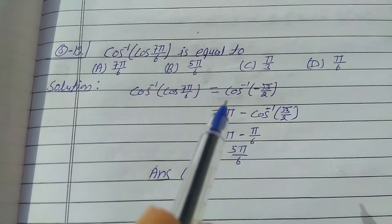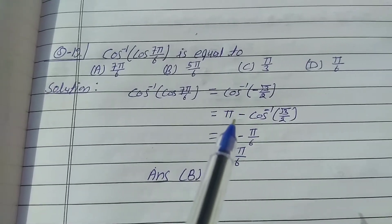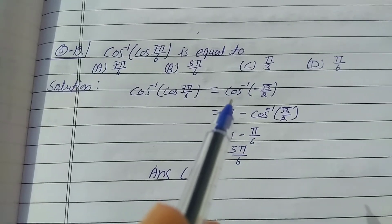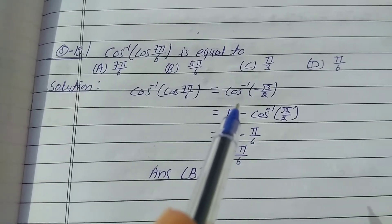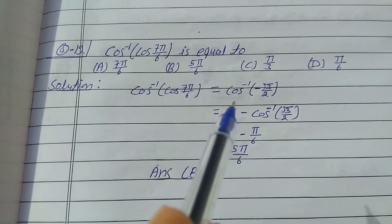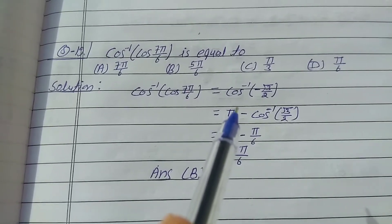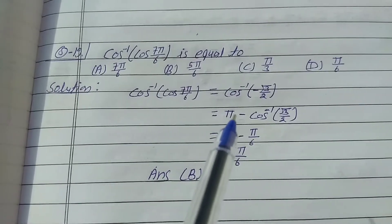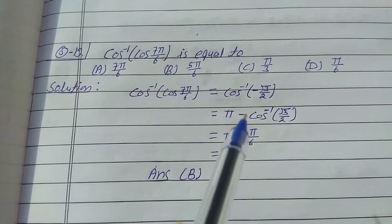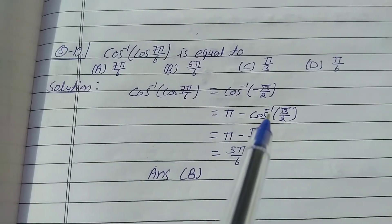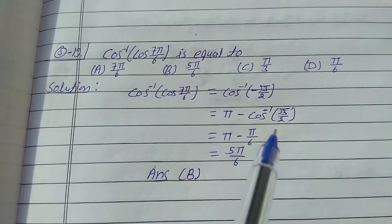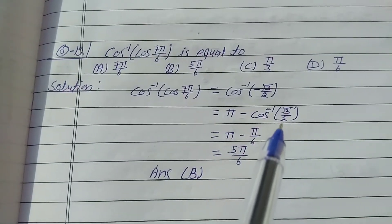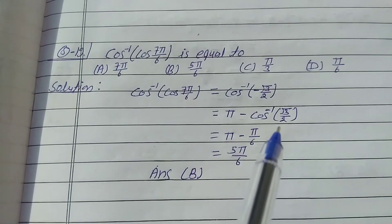To take the minus outside in cos inverse, we use the identity: cos⁻¹(−x) = π − cos⁻¹(x). So this equals π − cos⁻¹(√3/2). The value of cos⁻¹(√3/2) is π/6.